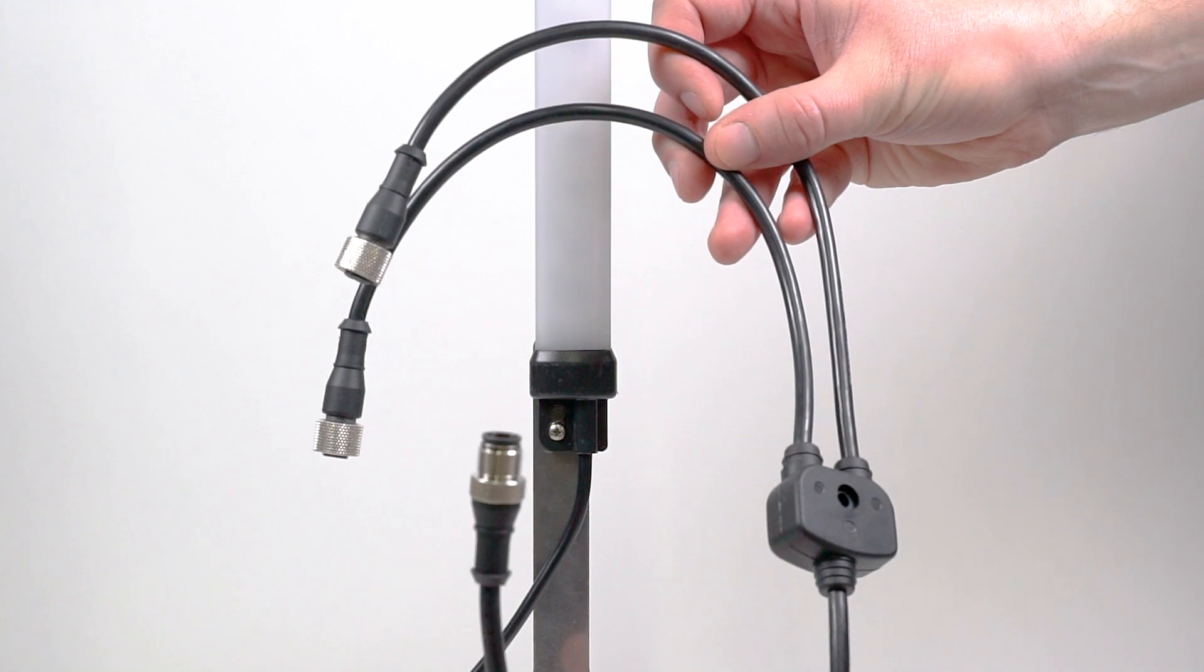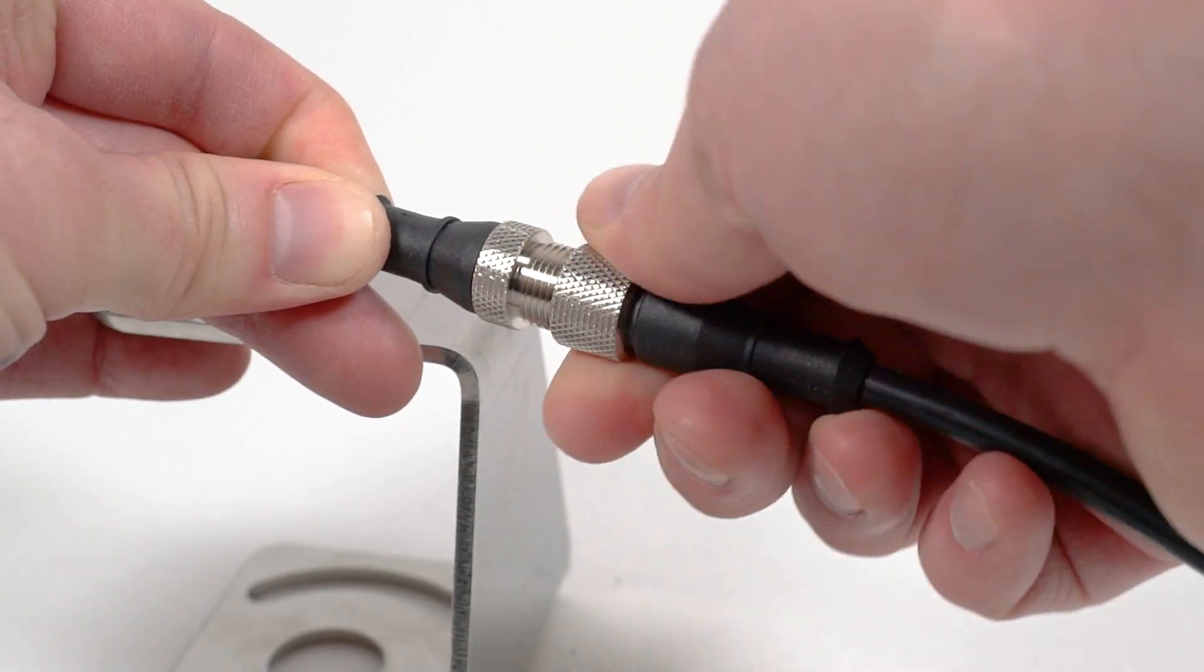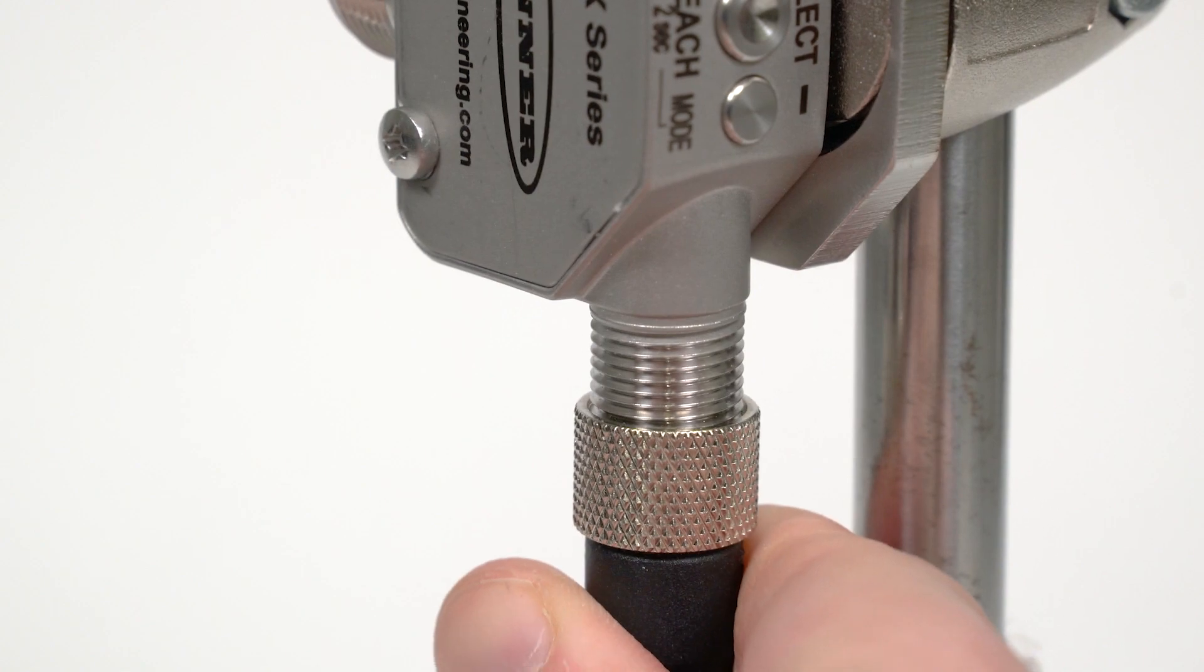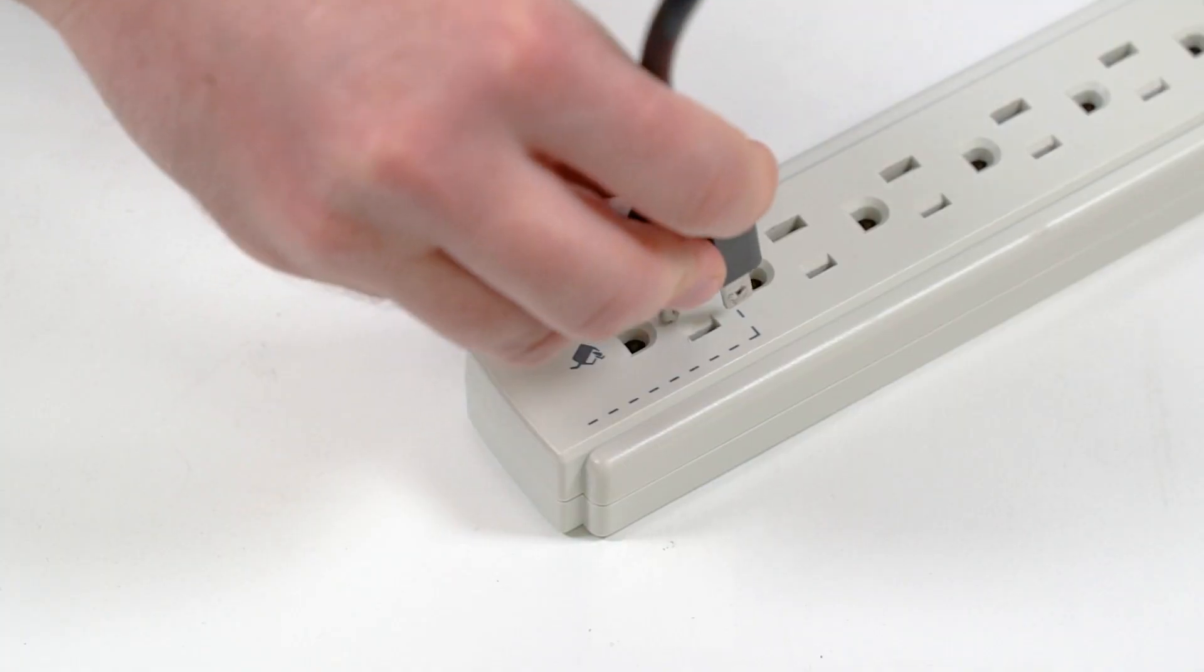Once the light is configured, connect it to one branch of the splitter cable. Connect the other branch to the Q4X sensor and connect the trunk to the power supply.